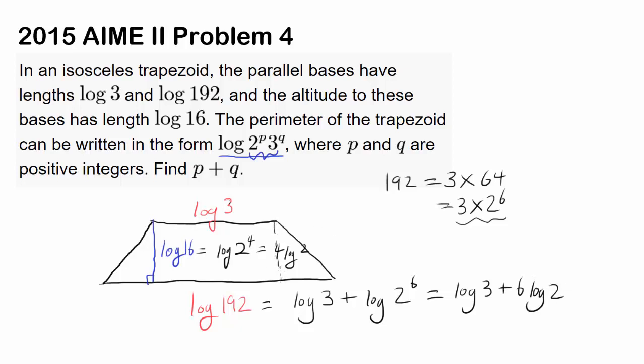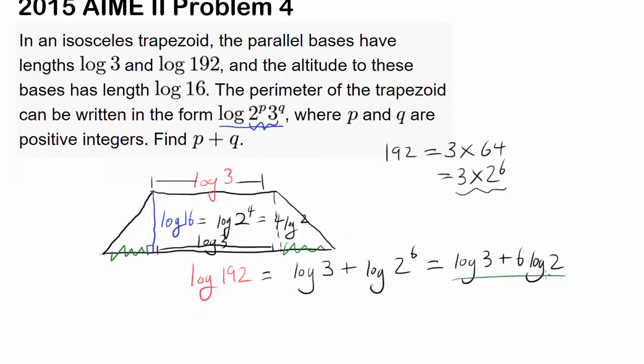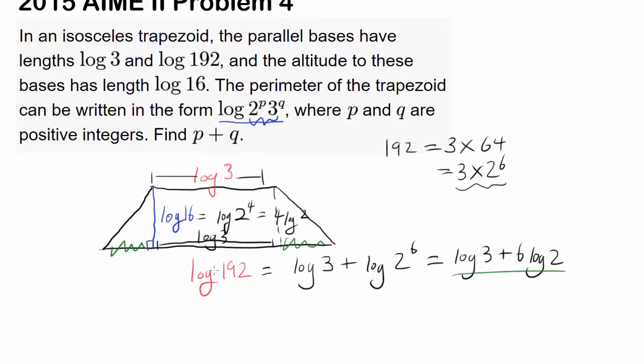We know this length has to be the same as log 3. The length of this one plus this one has to be this minus log 3. Let's call this x. Then x equals 6 log 2. To find x, divide by 2 to get 3 log 2. So this is 3 log 2.